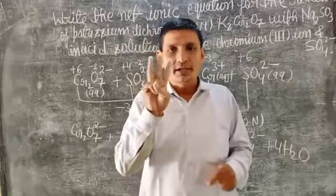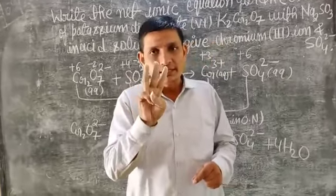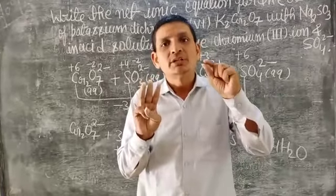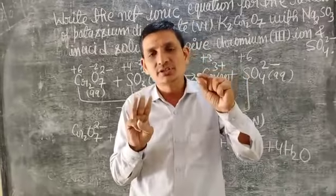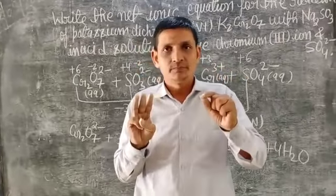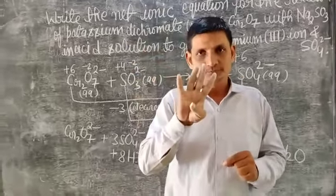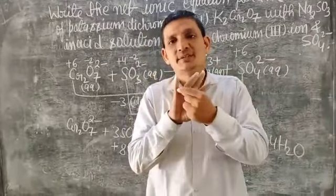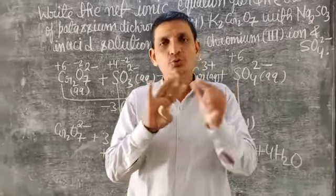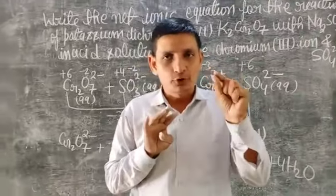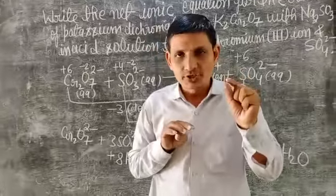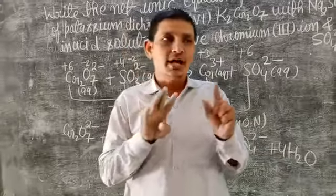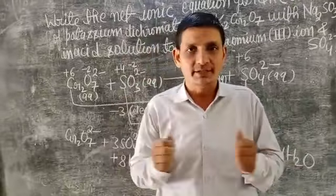Step 3 — calculate the decrease and increase in oxidation number, then multiply by a suitable number so that the decrease and increase in oxidation number become equal. Step 4 — to balance charge, add hydrogen ions in acidic medium; use hydroxide ions and water molecules in basic medium; in neutral medium use hydrogen ions and hydroxide ions on the appropriate side.